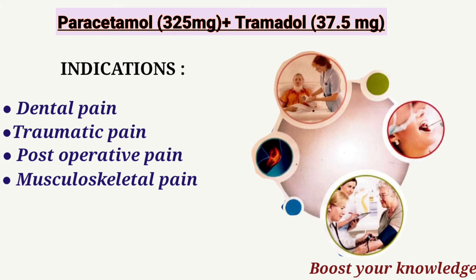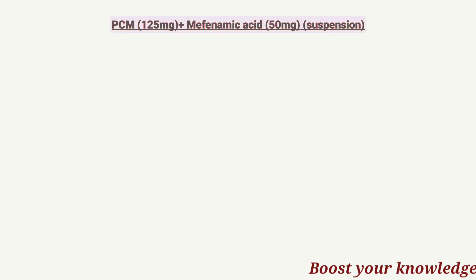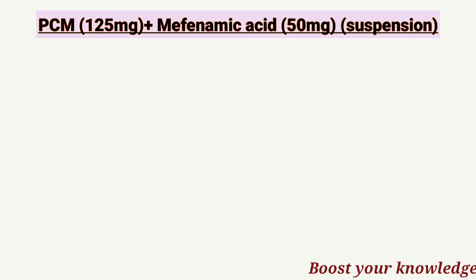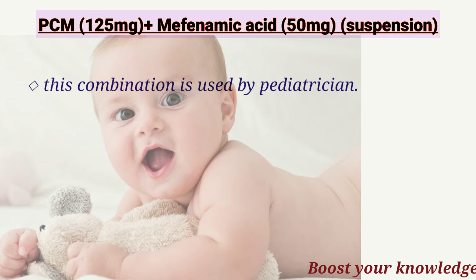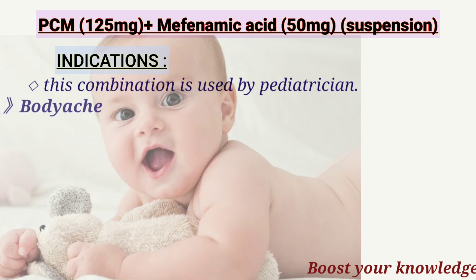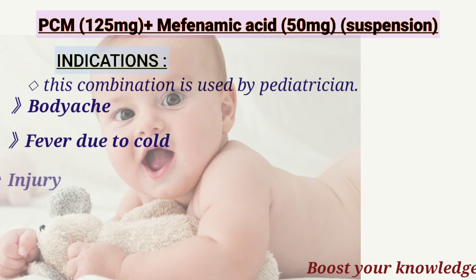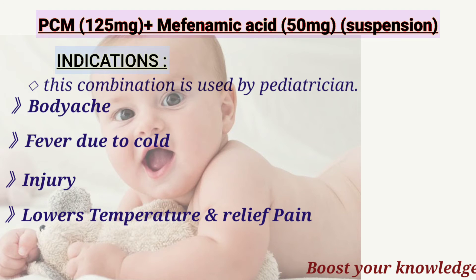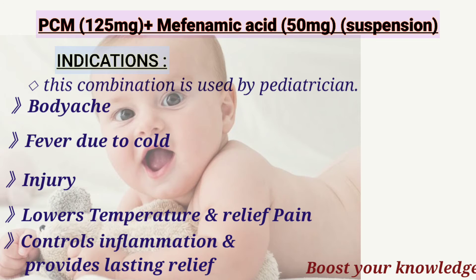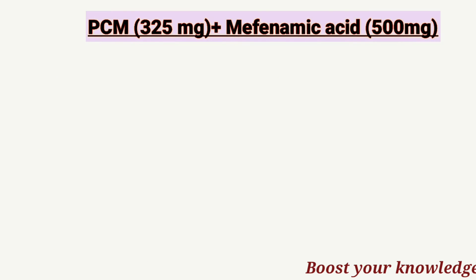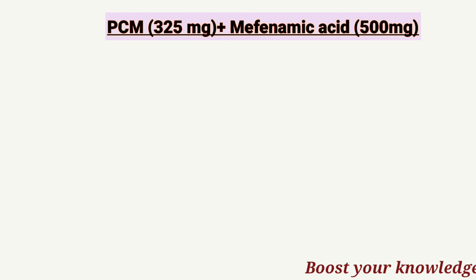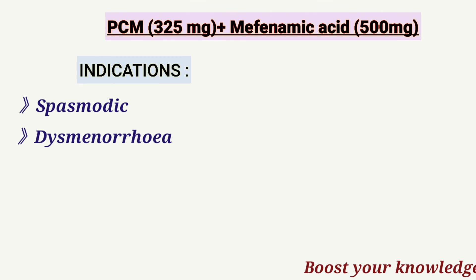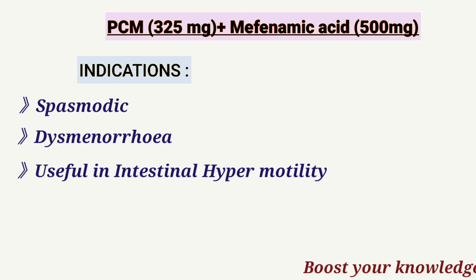Next is PCM 125 mg plus mefenamic acid 15 mg suspension. This combination is used by pediatricians. Indications are body ache and fever due to cold or injury — it lowers temperature, relieves pain, controls inflammation, and provides lasting relief. For adults, the dose is PCM 325 mg plus mefenamic acid 500 mg; indications include spasmodic dysmenorrhea and intestinal hypermotility.